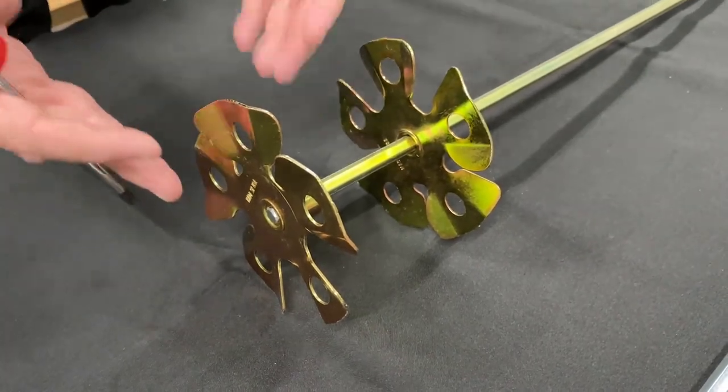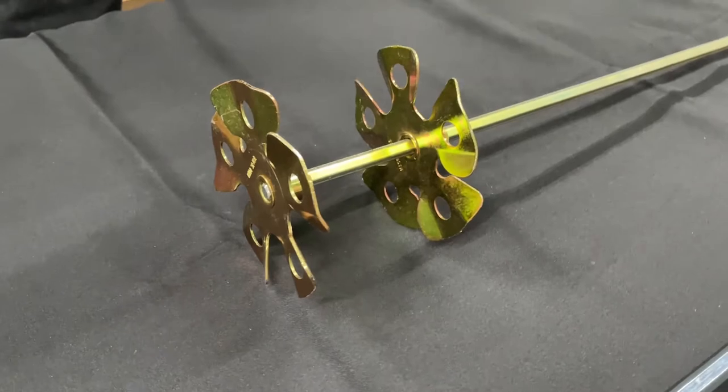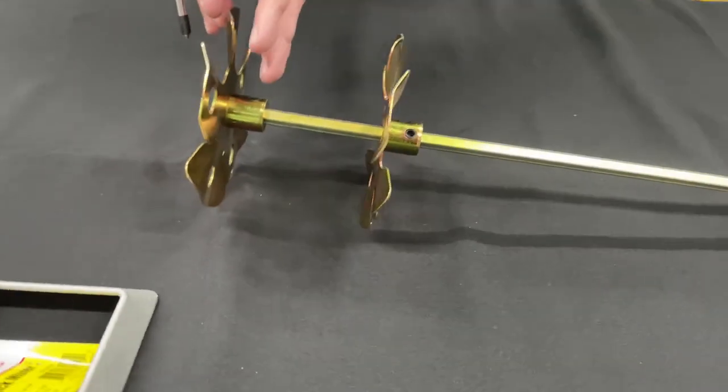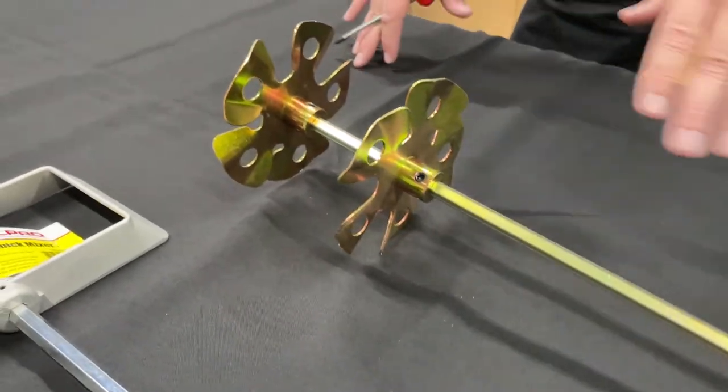The bottom blade is designed to force the material up, and the top blade is designed to force the material down. So you can really knock out all the lumps and smooth.